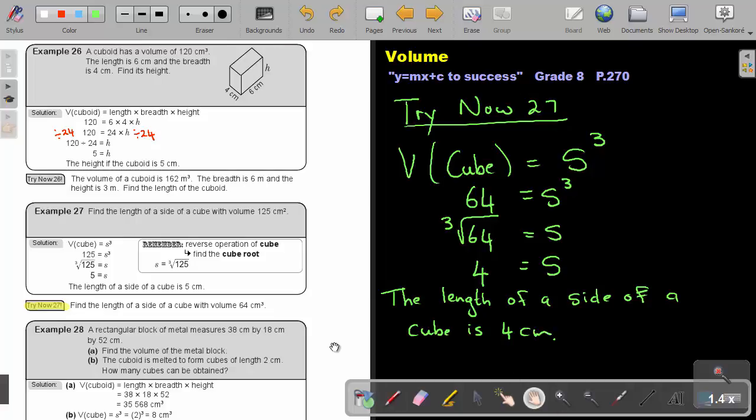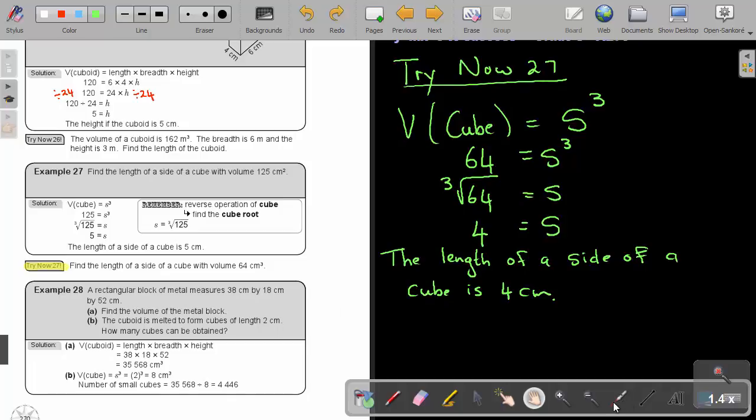Let's look at the final one. Example 28. A rectangular block of metal measures 38 by 18 by 52, length, breadth, height. Find the volume of the block. So that was easy. Just length times breadth times height.